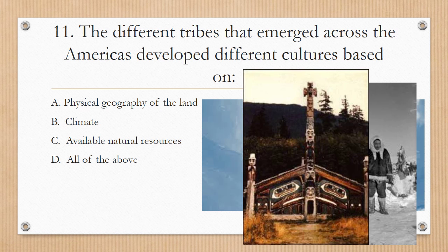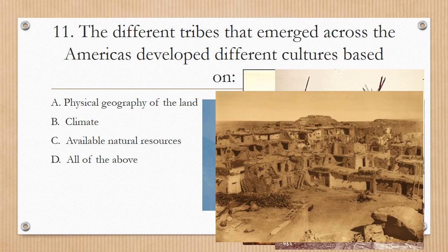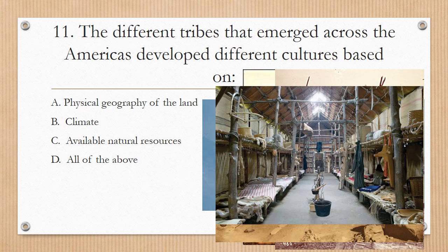Think about the Kwakiutl homes — they are made out of wood because there are lots of forests there, and they are so enclosed with roofs and a door because it rains very often in that region. The Lakota Sioux teepees are made of buffalo skins because there were lots of buffalo — that was an available natural resource — and they needed to pick up and move to follow that resource. The adobe houses were made of clay because that's what the Pueblo people had, and the Iroquois longhouse is made out of trees and bark because that is what the Iroquois had.